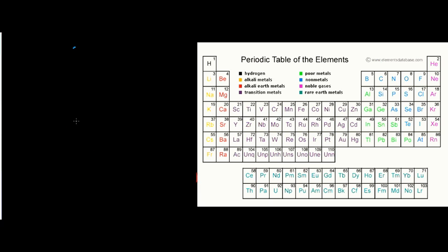The radius of an atom is inversely proportional to its ionization energy. As the atomic radius gets smaller, the ionization energy gets larger. If an atom has a small radius, it's harder to pull an electron out because there's a greater attraction due to the smaller distance. An atom with a large radius has less attraction, making it easier to remove an electron.